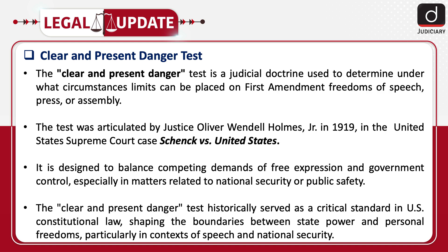The Clear and Present Danger test is a judicial doctrine used to determine under what circumstances limits can be placed on First Amendment freedoms of speech, press, or assembly. The test was articulated by Justice Oliver Wendell Holmes Jr. in 1919 in the U.S. Supreme Court case Schenck versus United States. It is designed to balance competing demands of free expression and government control, especially in matters related to national security or public safety. It has historically served as a critical standard in U.S. constitutional law, shaping the boundaries between state power and personal freedoms.